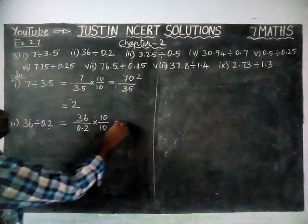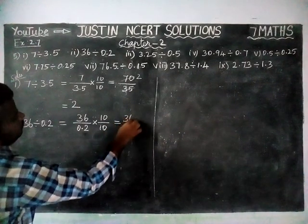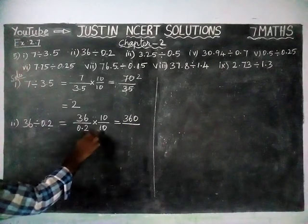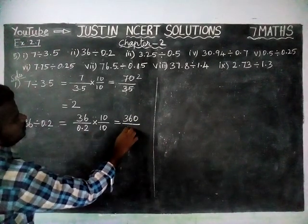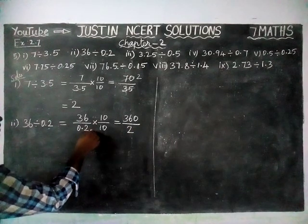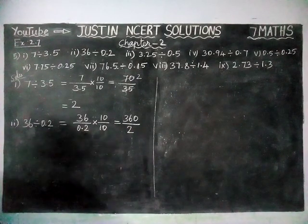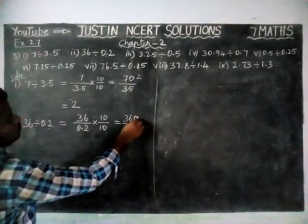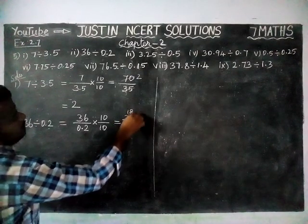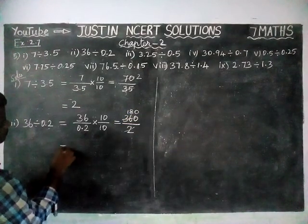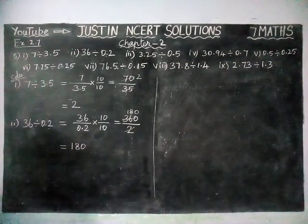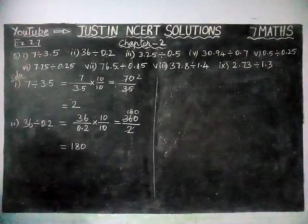Now 36 into 10 is equal to 360, divided by 0.2 into 10 is equal to 2. So this decimal point is moved to the right-hand side. When we simplify: 1 × 2 is 2, here 18 × 2 is 36, and here 1 and 0. So the answer is 180.